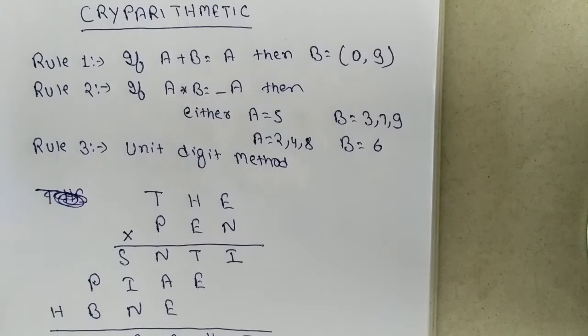The first rule is if A plus B equal to A then B is 0 or 9. Rule number 2, if A into B equal to A in unit digit, then either A equal to 5 and B equal to 3, 7, 9, or A equal to 2, 4, 8 and B equal to 6. The third rule is unit digit method.